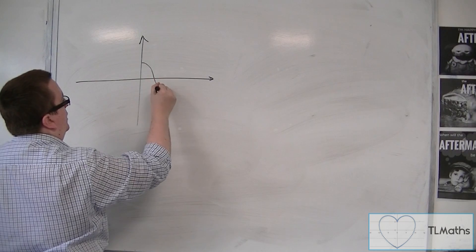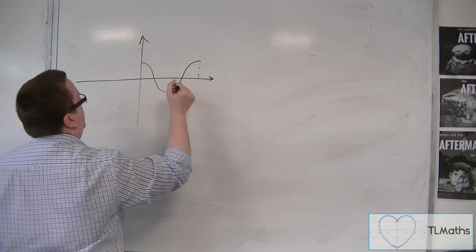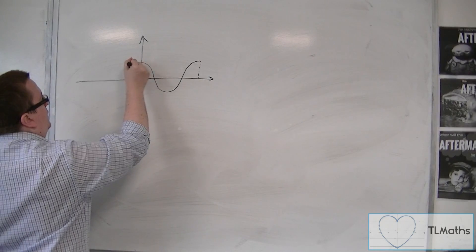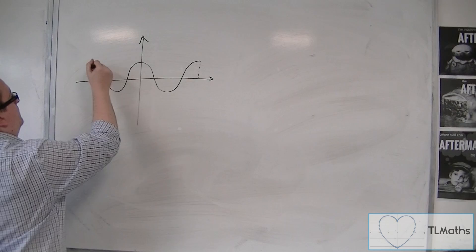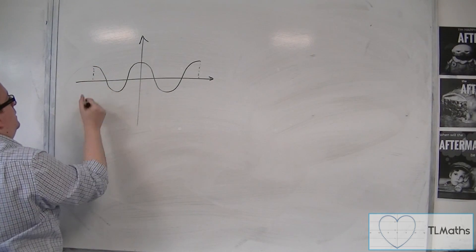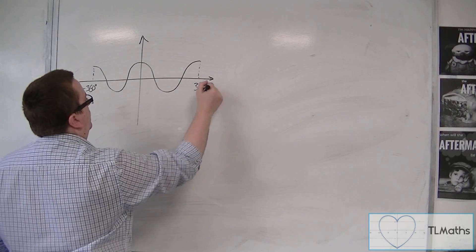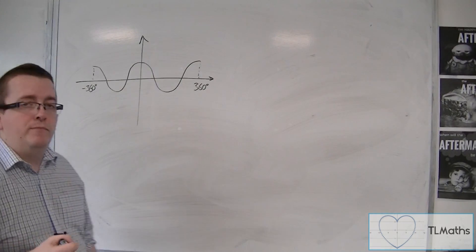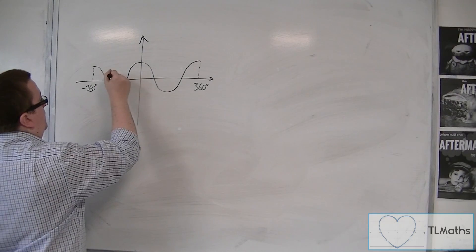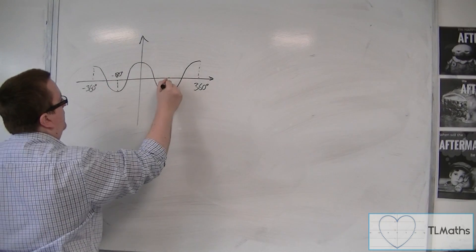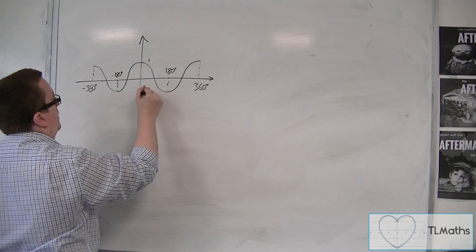So this is what it looks like on the right-hand side, and on the left-hand side, it looks like that. So that's minus 360 degrees and 360 degrees, or you could think of it as minus 2π and 2π. There's minus 180, there's positive 180, going between 1 and minus 1.